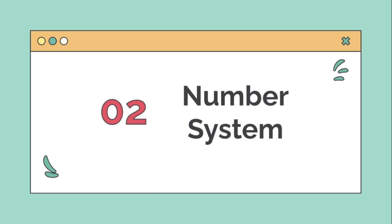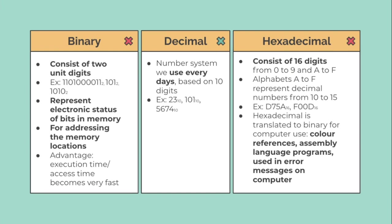Now let's look at the second content: number systems. There are three types — binary, decimal, and hexadecimal. Binary consists of two digits: one and zero. Examples include 101 and 1010. Binary represents the electronic status of bits in memory and is used for addressing memory locations. One advantage of binary is that execution time and access time become very fast. Decimal is the number system we use every day, based on 10 digits — for example, 23, 101, 5674.